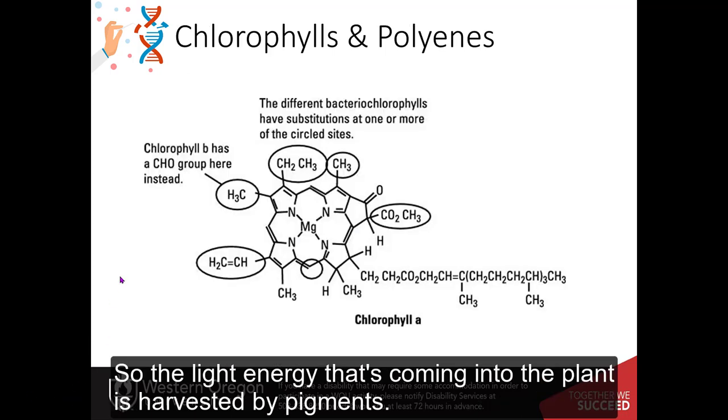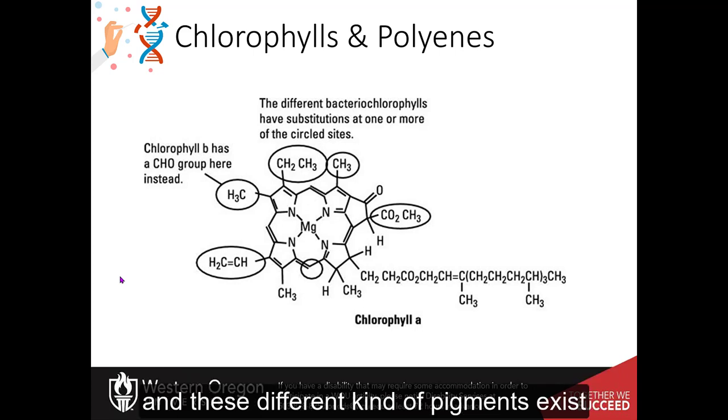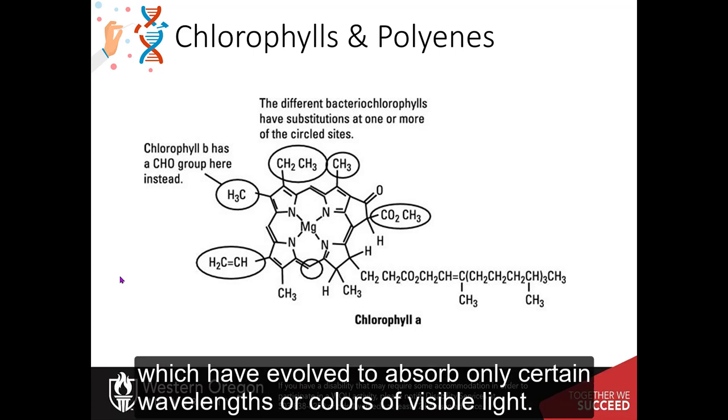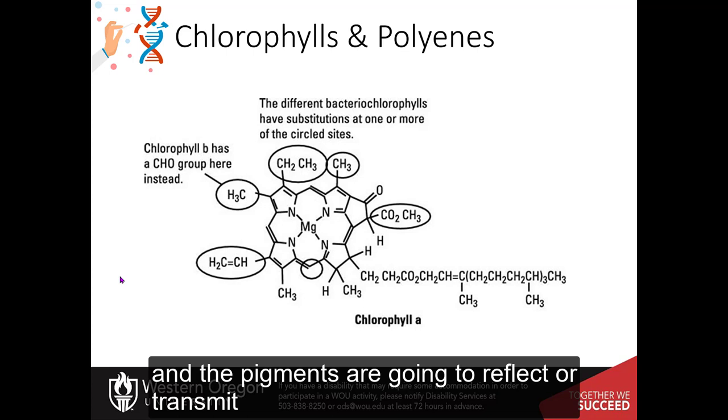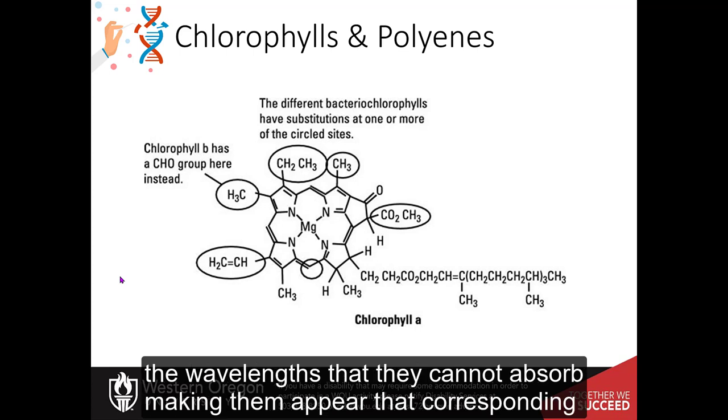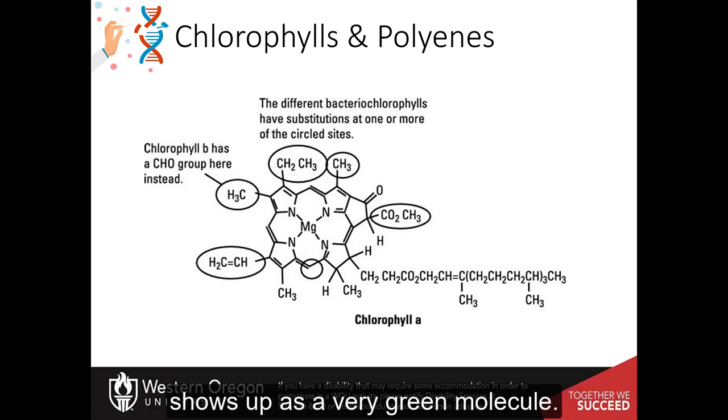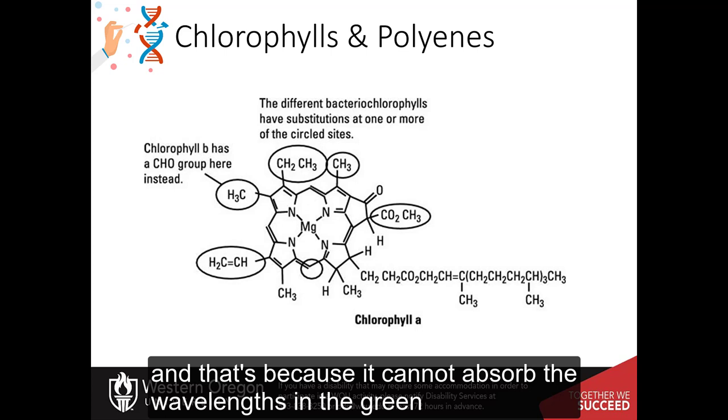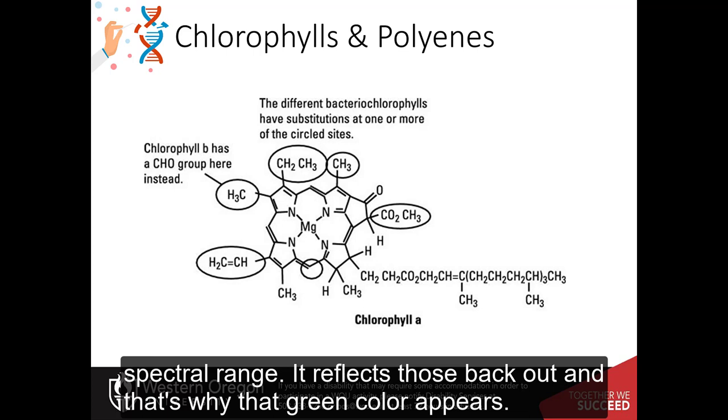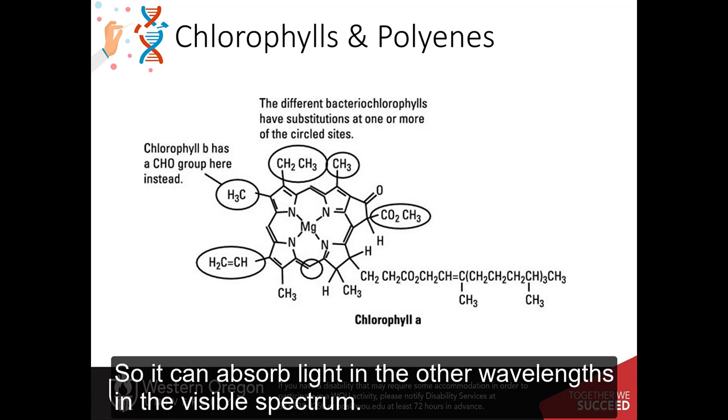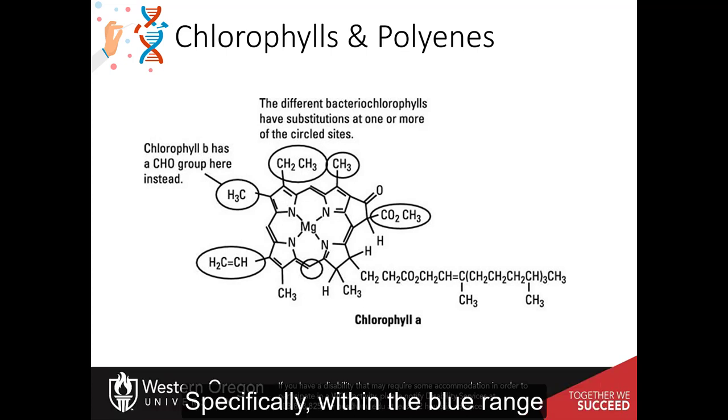So the light energy that's coming into the plant is harvested by pigments, and these different kind of pigments exist, which have evolved to absorb only certain wavelengths or colors of visible light, and the pigments are going to reflect or transmit the wavelengths that they cannot absorb, making them appear that corresponding color. So chlorophylls, for example, that's shown here, the chlorophyll A, shows up as a very green molecule, and that's because it cannot absorb the wavelengths in the green spectral range. It reflects those back out, and that's why that green color appears. So it can absorb light in the other wavelengths in the visible spectrum, specifically within the blue range, and it has another peak in the red range.